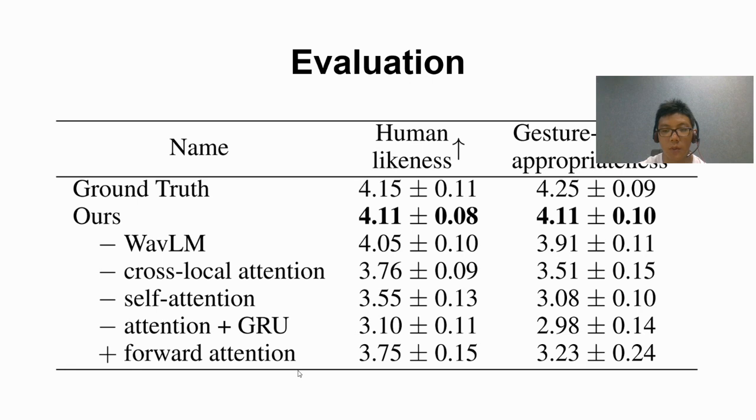When there is no cross-local attention, the scores of both dimensions drop a lot because many gesture generation steps only involve short-range correlations. Local attention can capture local information better. Only self-attention relies on global information of long sequences and becomes less effective. Both human-likeness and gesture-speech problems drop more when self-attention is removed. When attention is not used, we replace it with a GRU-based model, which has the worst results among all models, further illustrating the effectiveness of the attention.